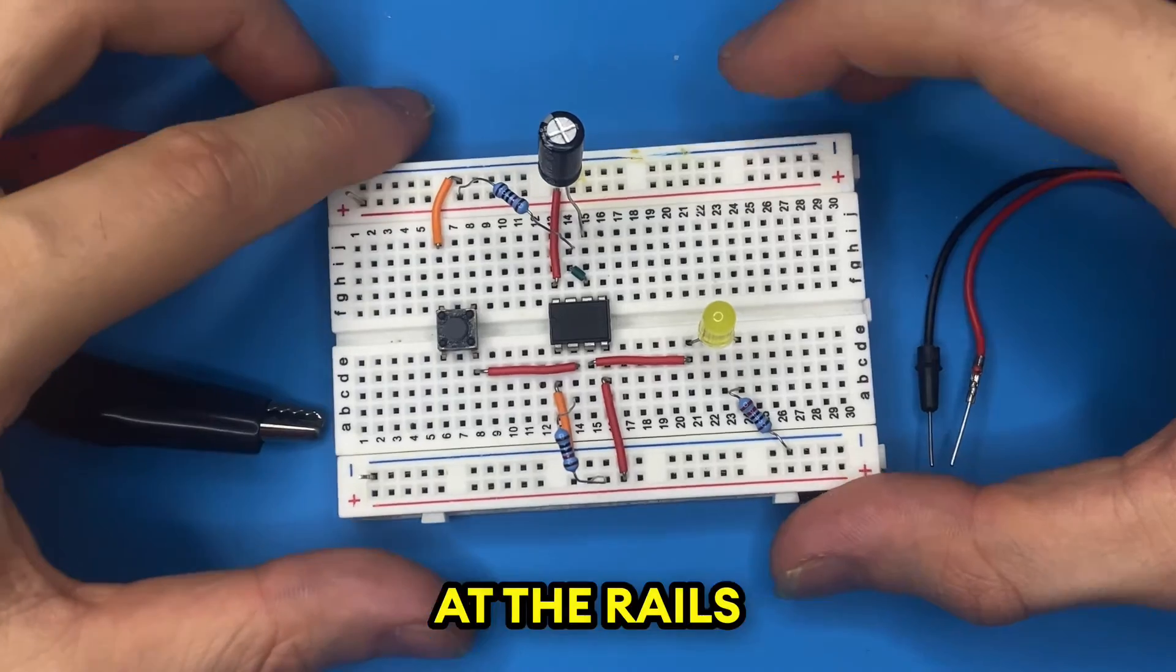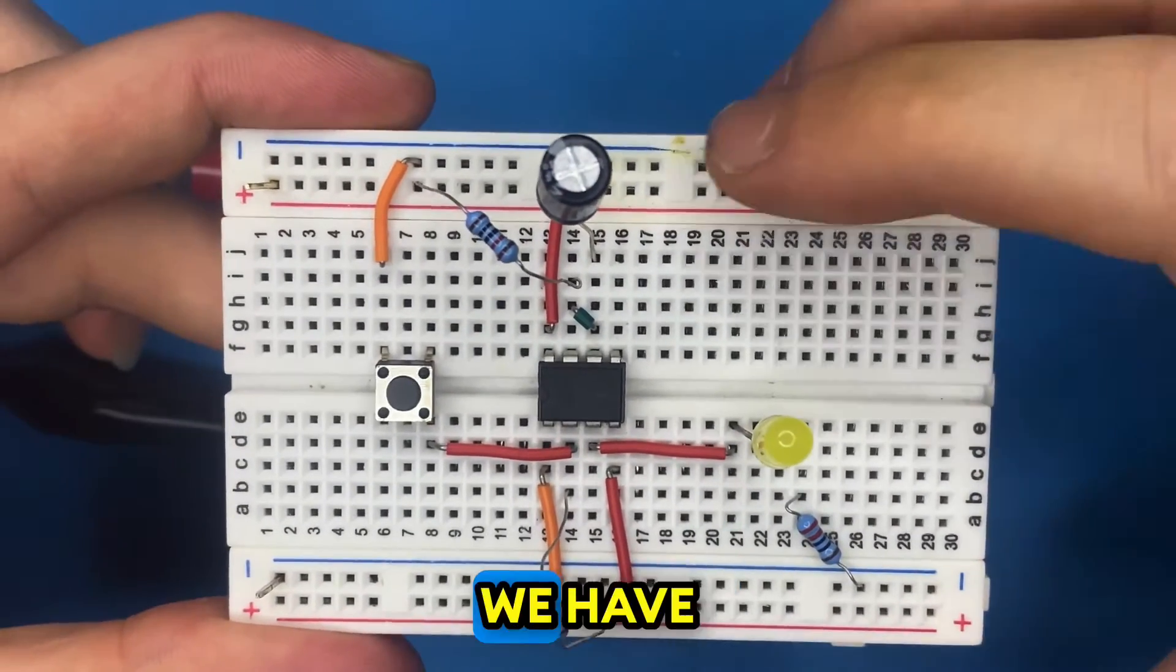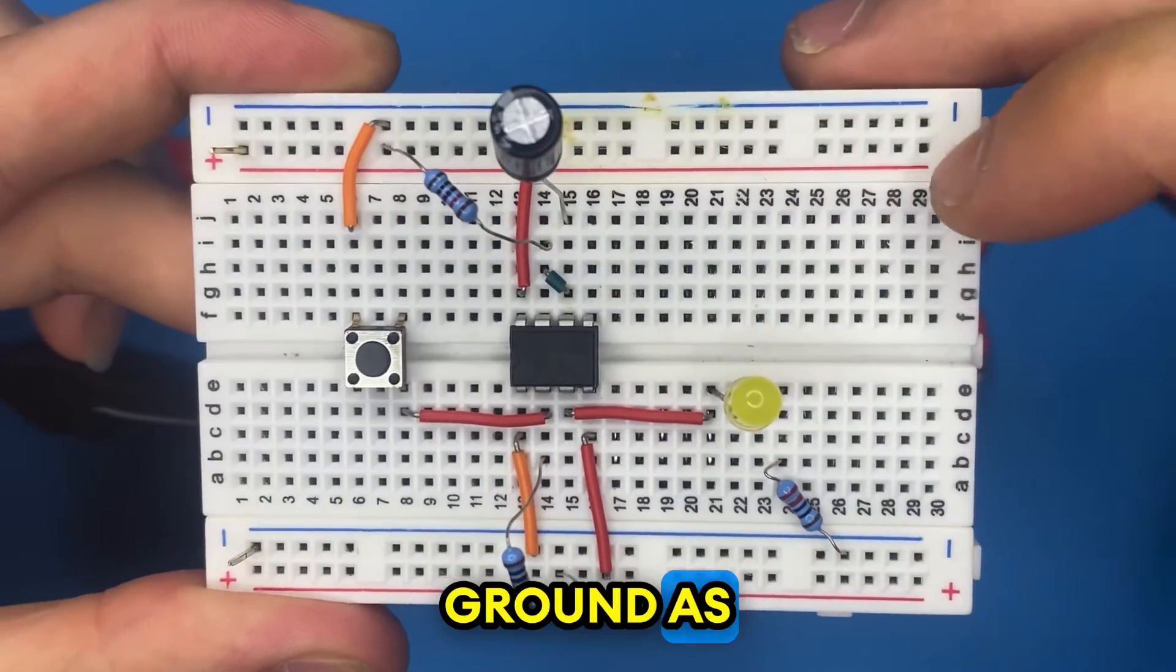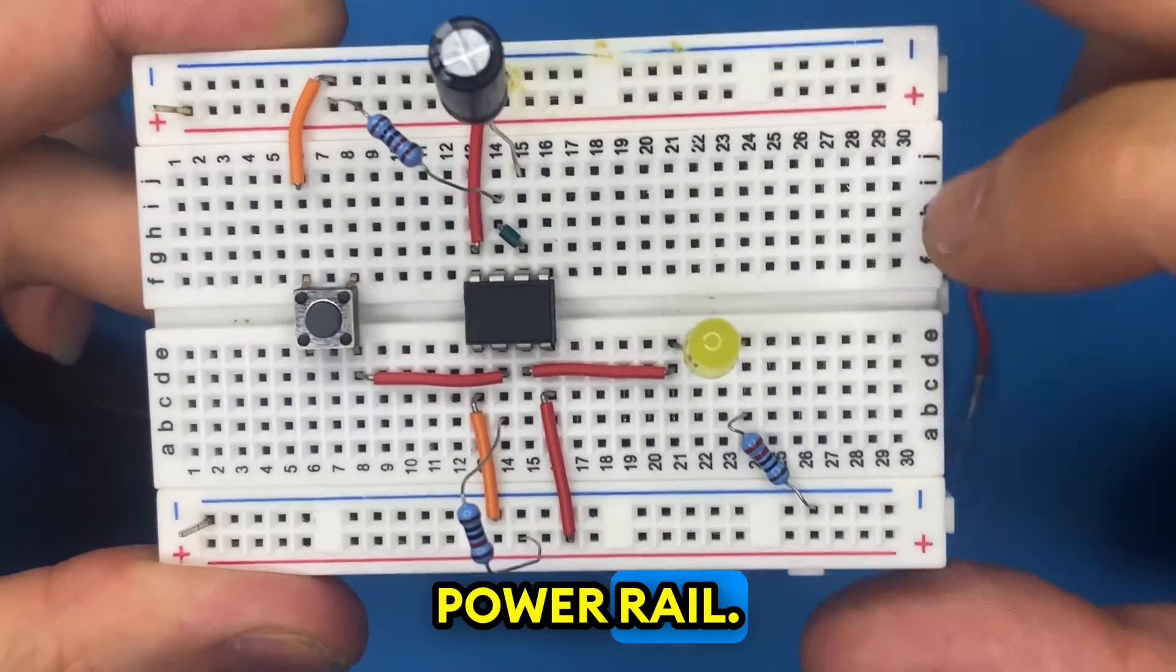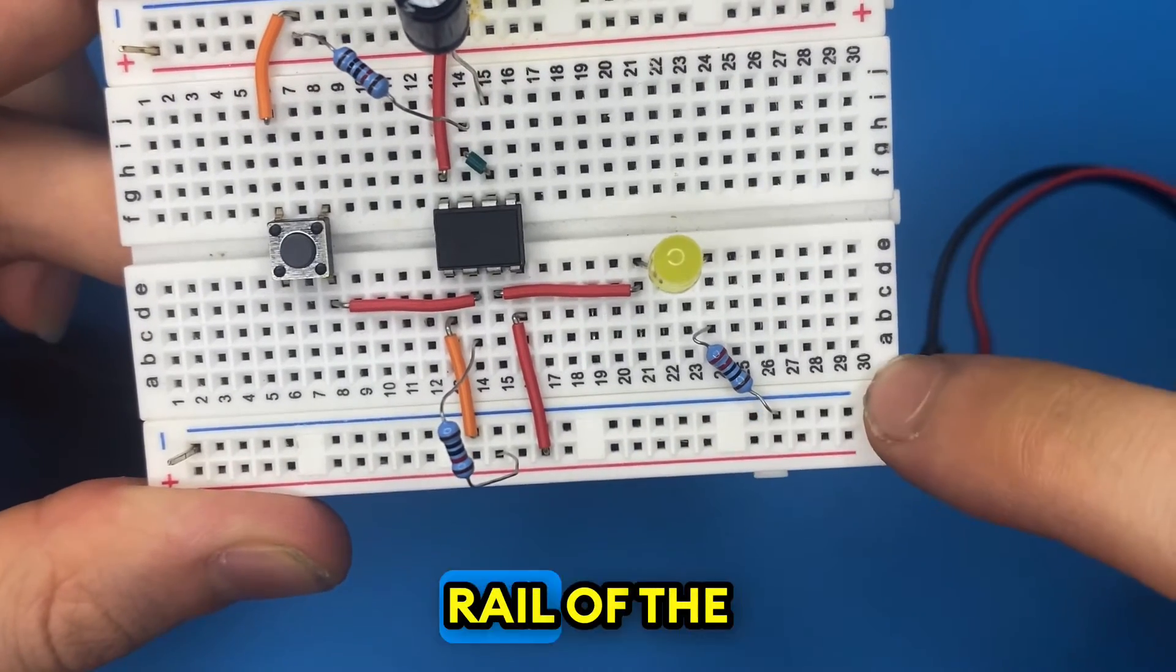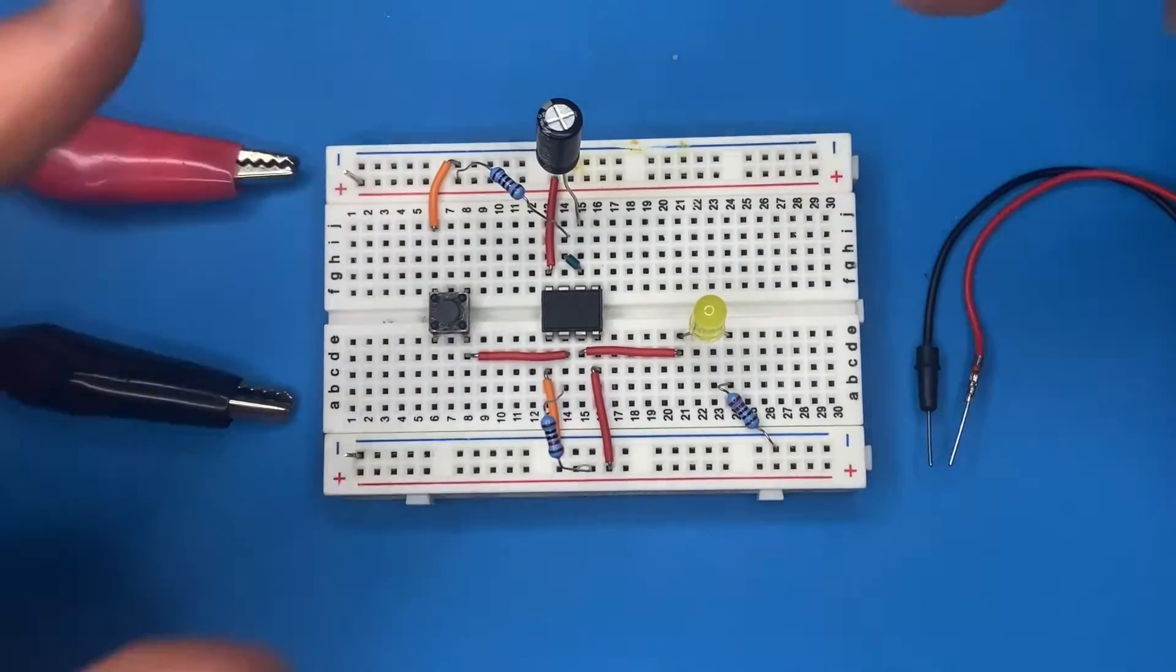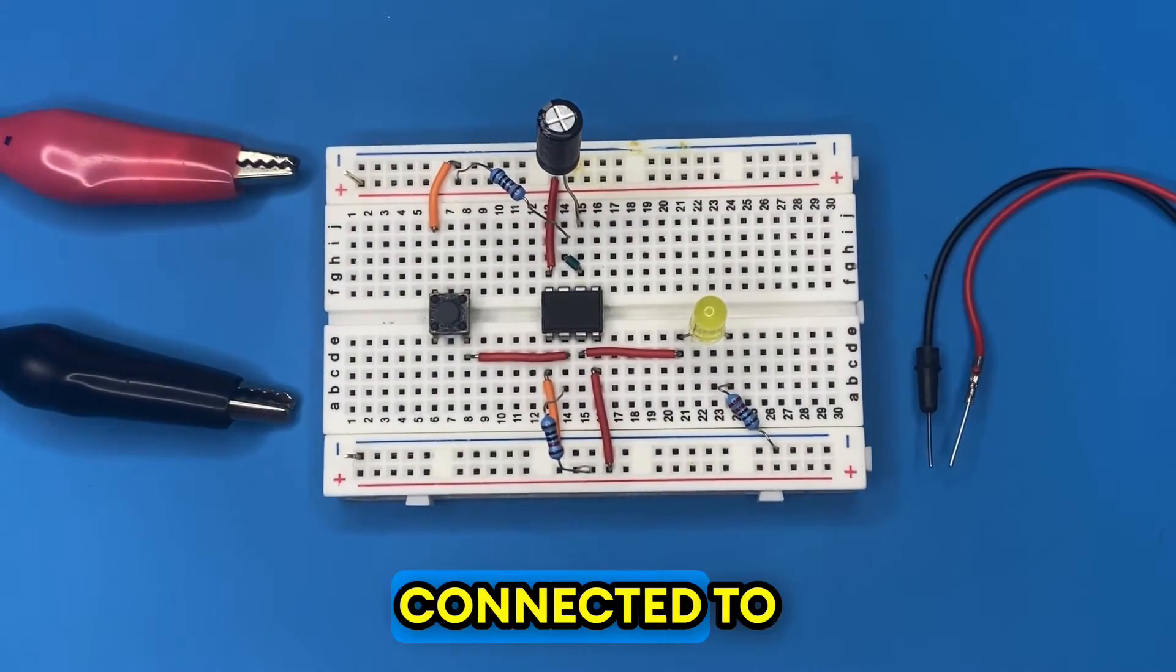Let's have a look at the rails of the breadboard. On the upper side we have connections on the ground as well as on power rail. On the lower side we have connections on the positive rail as well as the negative rail. This means that the rails of the breadboard must be connected to each other.